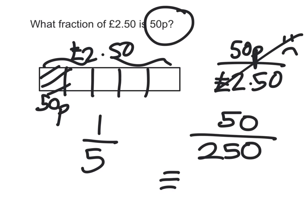So, 50 over 250 is equivalent to 5 over 25, and they're both in the 5 times table. So, if you divide the numerator and denominator by 5, you'll get one-fifth.